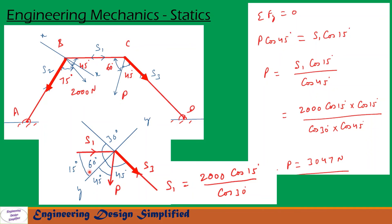Resolving forces along the YY plane with sigma Y equal to 0: the component of P along YY is P cos 45, which equals the component of S1 along YY, that is S1 cos 15. So P equals S1 cos 15 divided by cos 45. Substituting S1 equal to 2000 cos 15 divided by cos 30 into this expression and simplifying, we get P equal to 3047 newton. Therefore, a force P of 3047 newton must be applied as shown in the figure to prevent the mechanism from moving.